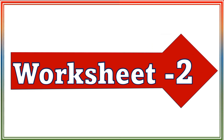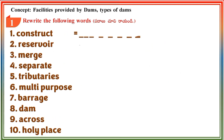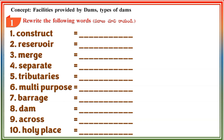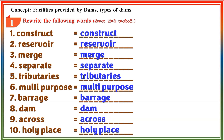Worksheet 2 — Concept: Facilities provided by dams and types of dams. Section 1: Rewrite the following words. Construct. Reservoir. Merge. Separate. Tributaries. Multipurpose. Barrage. Dam. Across. Holy place.